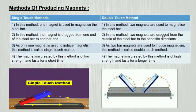Less known method producing magnets. There are two methods of making artificial magnets: Single touch method and double touch method. Under single touch method, one magnet is used to magnetize the steel bar.